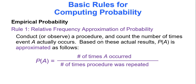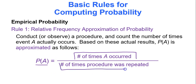The empirical probability is when an experiment is actually being performed in real-time. The probability of event A equals the number of times event A occurs divided by the number of times the procedure is repeated. For example, if I flip a coin 100 times and want to find the probability of getting heads, the numerator is how many heads I got and the denominator is 100. In statistics class, we rarely use empirical probability since performing every experiment isn't practical.